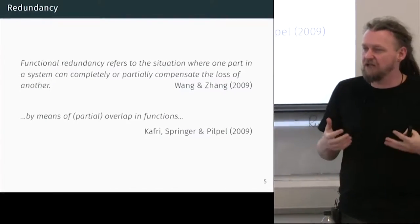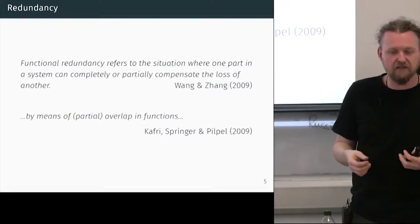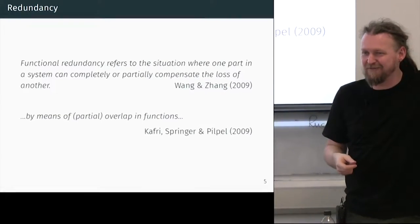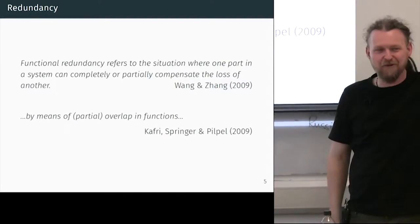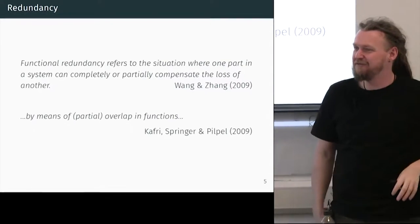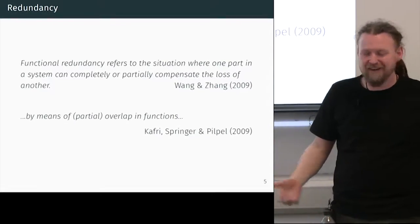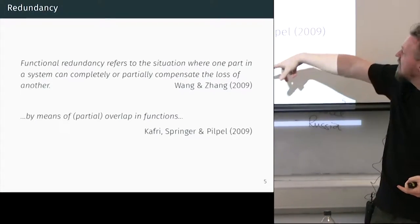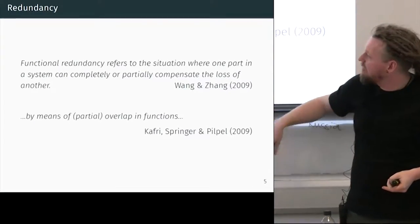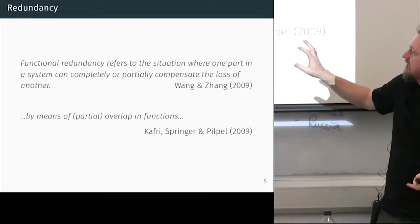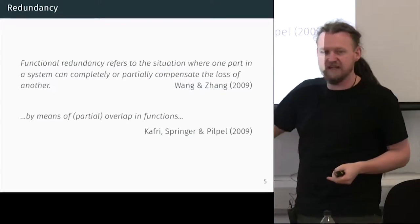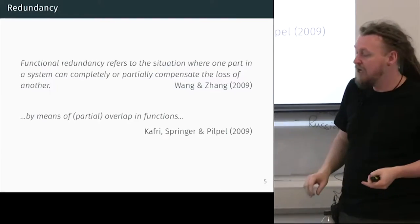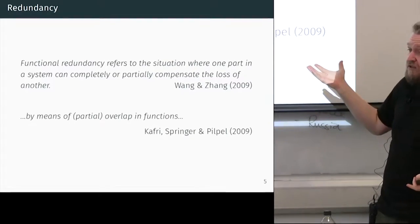We can turn this into a linguistic diagnostic: if we cover up some morpheme or formative and we can still work out what the word means, then that morphological formative was redundant. This definition comes from Wang and Zhang. In a paper by Kafri, they give a bit more detail and talk about overlapping functions, which will come in later when we start talking about set theory. These are very general definitions of redundancy — both from papers on genetic redundancy — and there are actually very compelling parallels between linguistic and genetic redundancy.